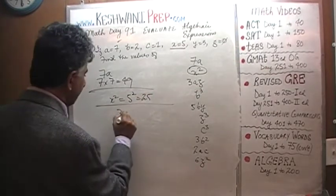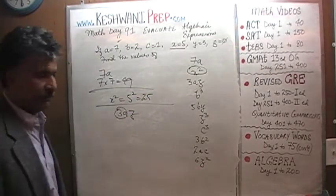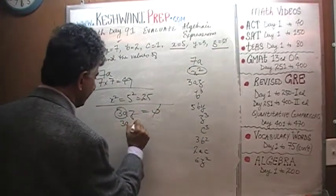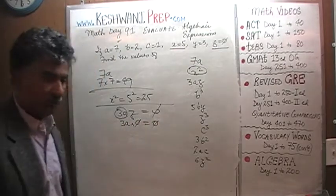3AZ, doesn't matter what 3 times A is. Z we are told is 0, so the whole thing is going to be 0, because it's 3A times 0, and anything times 0 is 0.